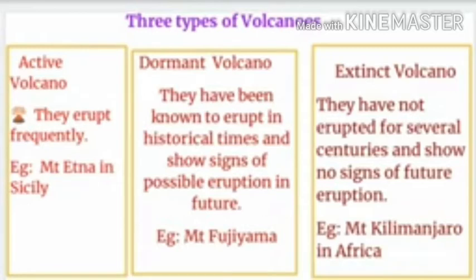Mount Fujiyama in Japan is an example of a dormant volcano, and Mount Kilimanjaro in Tanzania, in the continent of Africa, is an example of an extinct volcano.